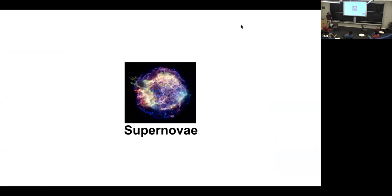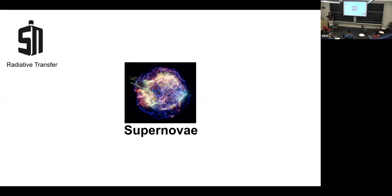I'll talk about supernovae — the explosions of stars. A fundamental question common to all these explosions is what are the progenitors? What are the chemical compositions of the stars that give rise to these events? If you're theoretically inclined, we do radiative transfer. We work extensively with TARDIS, an open-source radiative transfer code. This is the sort of work I do, where we build models of the supernova ejecta, simulate the processes that photons go through as they progress through the ejecta, and compare the synthetic results to observations to understand what the star looked like when it exploded.